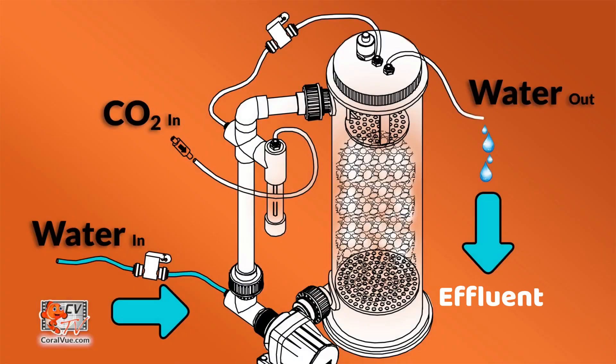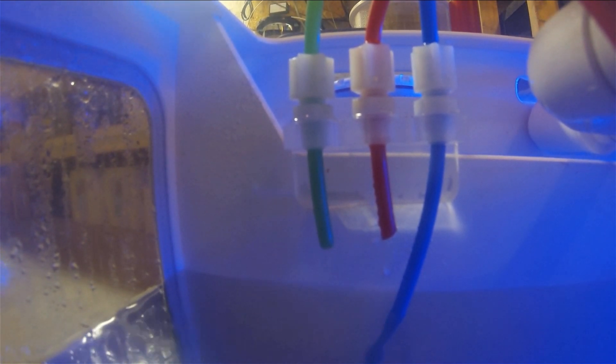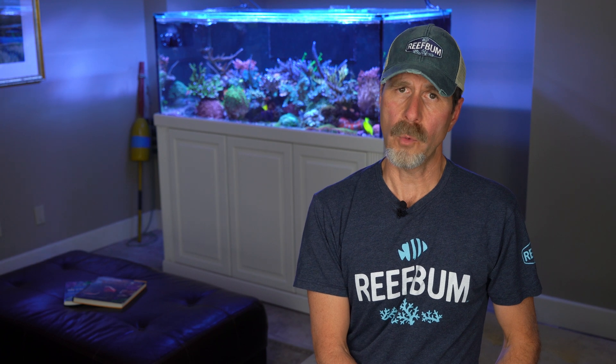The byproduct of this reaction is a liquid effluent that has a high concentration of calcium and alkalinity, which is dripped back into the sump or tank. The pH of the effluent coming out of a calcium reactor is low, so sometimes it is necessary to boost the pH.